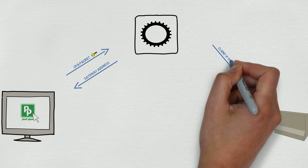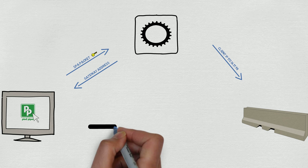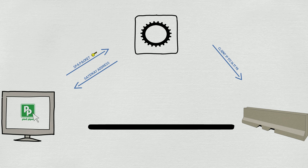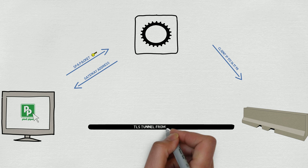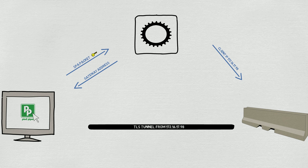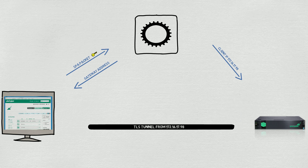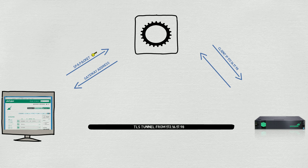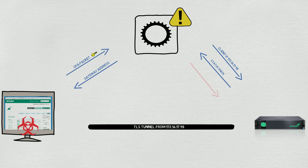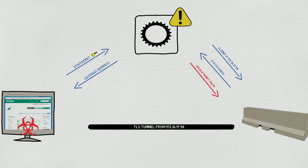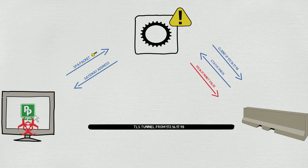This allows the gateway to know ahead of time that it should expect a connection from the SDP client. From there, the SDP client initiates a TLS connection to the gateway, which then allows a client to run the application through that tunnel. All the while, SDP clients and gateways are communicating to the controller and exchanging information. If a client's key is compromised or invalid, its connection is immediately blocked off and all visibility to applications or servers on the network is cut off. If a machine is showing signs of being compromised, it would no longer be considered trusted and also immediately cut off from the network and access to any resources.